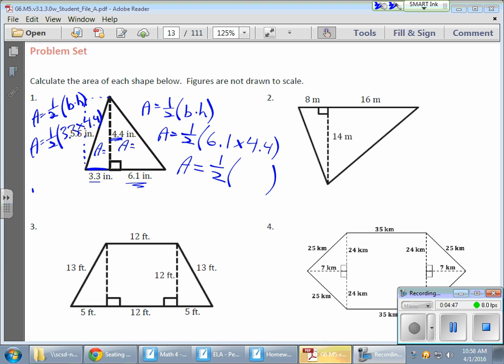And then I work that out. So over here's my one-half times that product. So 6.1 times 4.4 gives me 26.84. And if I divide that by 2 or take half of it, I wind up with 13.42 inches squared. Now on the left side here I have my 3.3 times my 4.4, same height, that gives me 14.52. I need to divide that by 2 or take half of it and I get 7.26 inches squared.